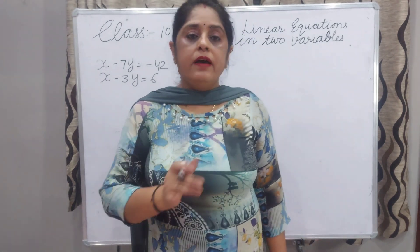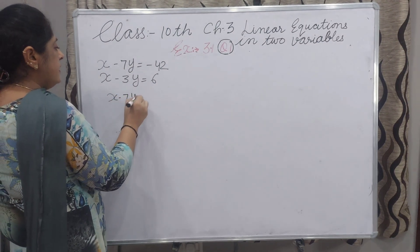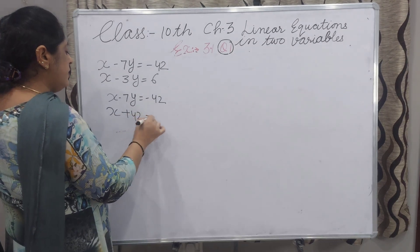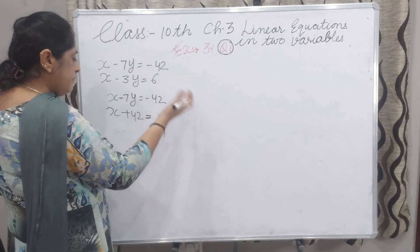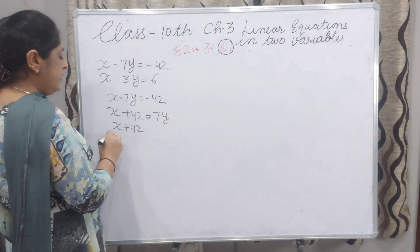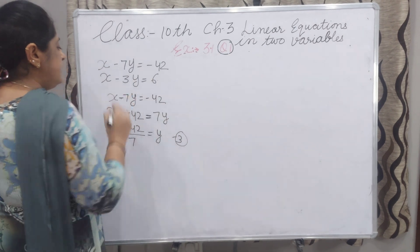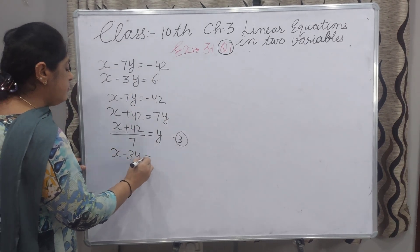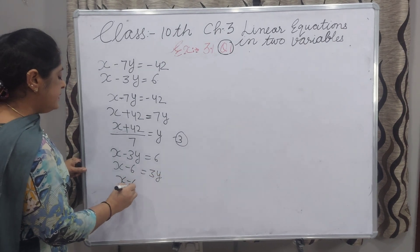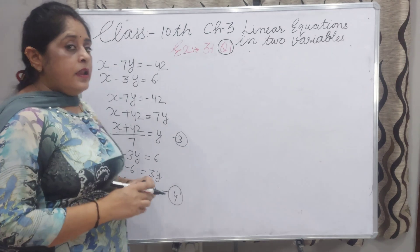Now I will convert both equations into terms of Y. From equation 1, X minus 7Y equals minus 42: bringing minus 42 to the left and rearranging gives Y equals (X plus 42) divided by 7. This is equation 3. From equation 2, X minus 3Y equals 6: rearranging gives Y equals (X minus 6) divided by 3. This is equation 4.